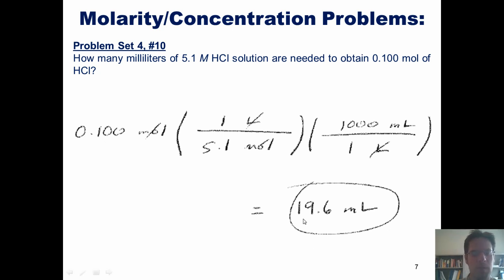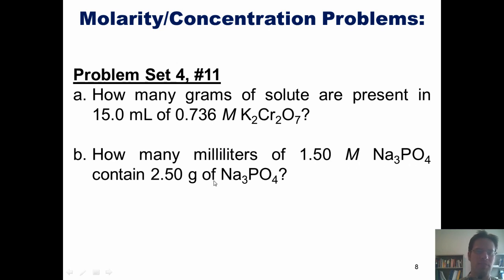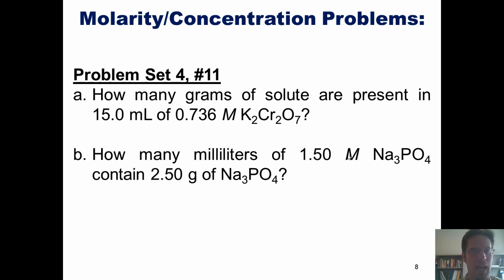To be fair, this should probably be expressed with only two significant figures to match the value that only has two significant figures. Here are some additional problems: how many grams of solute are present in a 15 milliliter solution of 0.736 molar potassium dichromate? And how many milliliters of 1.5 molar sodium phosphate contain 2.50 grams of sodium phosphate? We'll only do example A and let you try example B on your own.